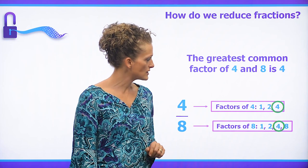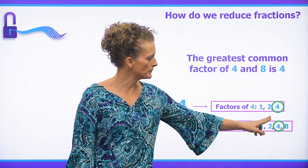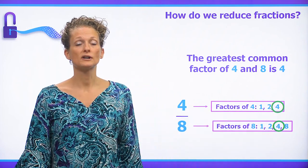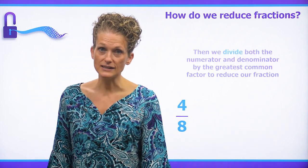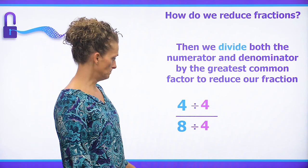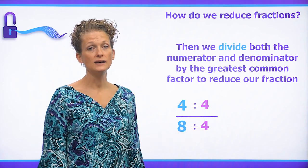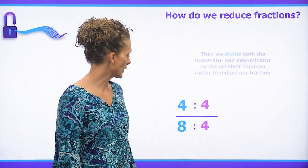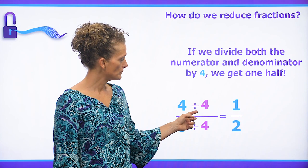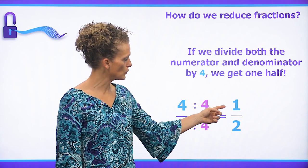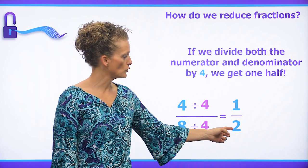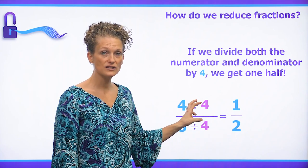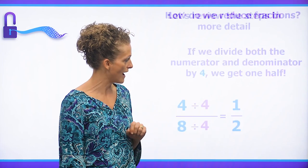The greatest common factor — if we look at the numbers that are on both lists: one, two, and four — four is the biggest number on both lists. That is our greatest common factor. So we take our greatest common factor and we divide both the numerator and the denominator by four. Four divided by four is one, eight divided by four is two. So when we divide both the numerator and the denominator by the greatest common factor, we get one half.